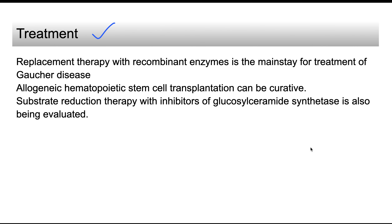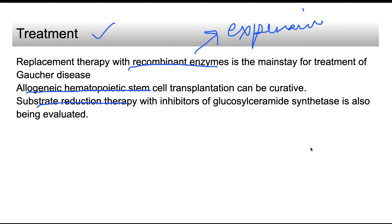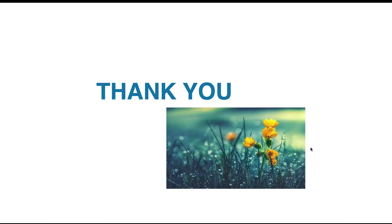Treatment includes firstly enzyme replacement therapy with recombinant glucocerebrosidase — this is the mainstay of treatment, though it is expensive. Second is allogeneic hematopoietic stem cell transplantation, which is curative but also expensive. A third option being explored is substrate reduction therapy, which prevents glucocerebrosides from being formed in the first place.